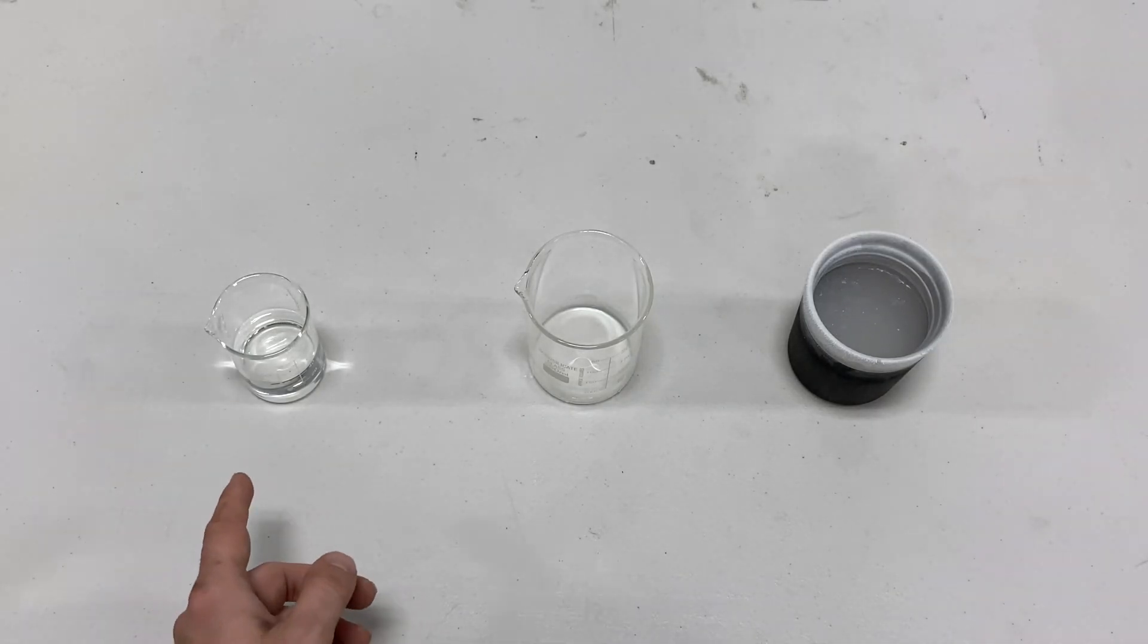Isopropyl alcohol has a freezing point of minus 128 degrees Fahrenheit. Liquid nitrogen is minus 321 degrees Fahrenheit, so we should see what kind of thing we end up with here.